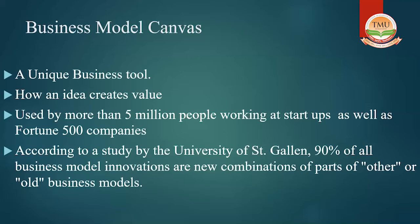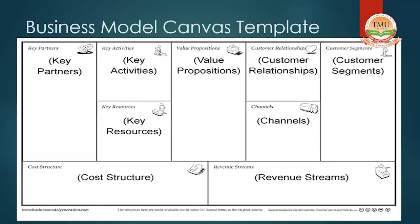They designed a grid known as the business model canvas. This grid has nine segments. The various factors or areas where we need to put our thoughts are: key partners, key activities, key resources, then value propositions, and on the right side: customer relationships, channels, and customer segments. At the bottom of this grid we have two very important financial aspects — cost structure and revenue streams.